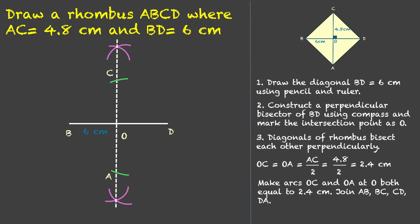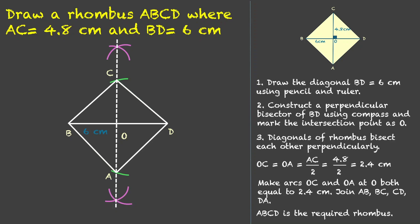Finally, we join AB, BC, CD, and DA. And we get the required rhombus ABCD.